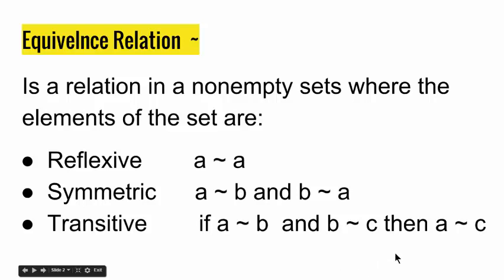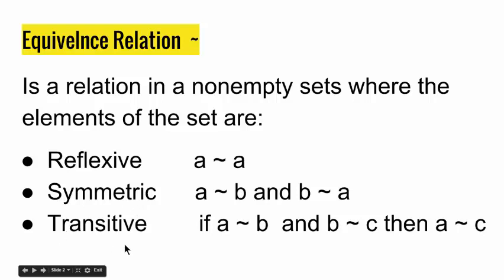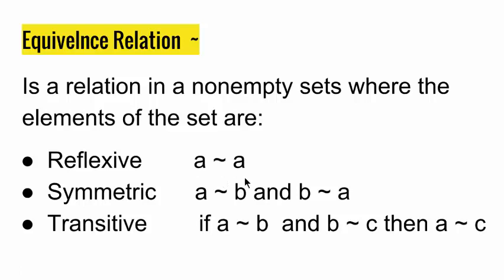In order to have equivalence relations in a set, we have to have reflexivity, symmetry, and transitivity between the elements of the set. For the elements to be reflexive, each element has to be equal to itself, meaning each element has to have an equivalence relation with itself.